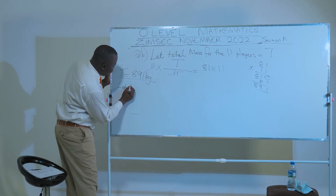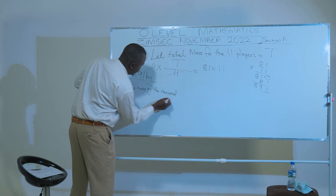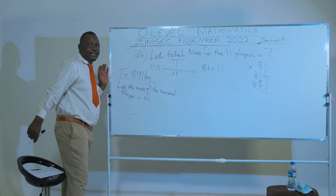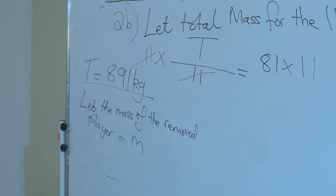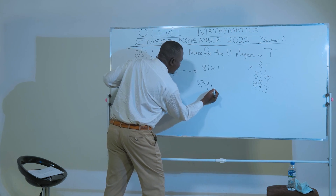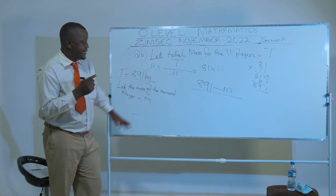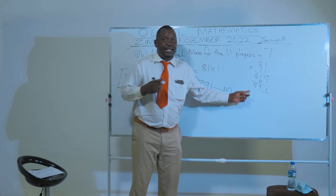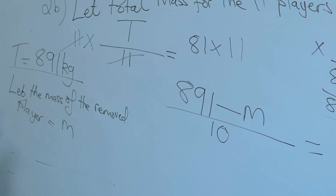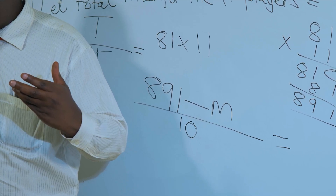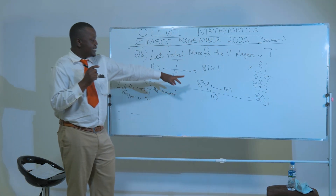Let the mass of the removed player be equal to M. So the statement of the question gives us: 891 minus M, divided by 10 — because after removing one player, 10 players remain — is equal to 80.1. We are now solving this simple linear equation for M. We remove the fractions by multiplying both sides by 10.